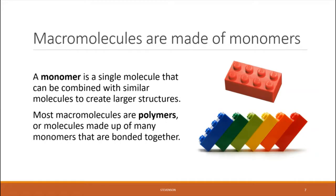Most macromolecules are considered polymers, which are chains of monomers put together. The prefix poly means multiple, so a polymer is a chain of multiple monomers. Now, the building blocks of every type of macromolecule look different from each other — the building blocks of a carbohydrate are different from the building blocks of a protein, for example. However, they do have some things in common, including the way that they get bonded together to make these larger molecular structures.